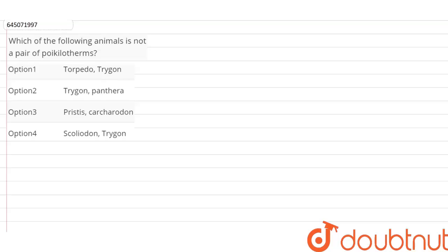In this question, we have to look at the given options and select the pair in which both are not poikilotherms.